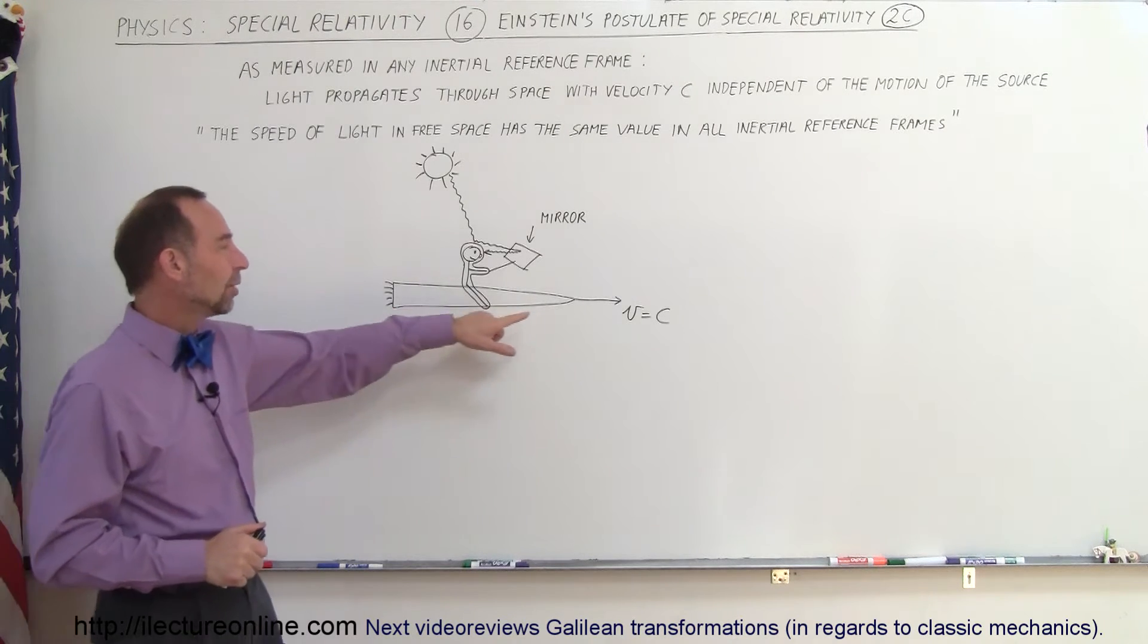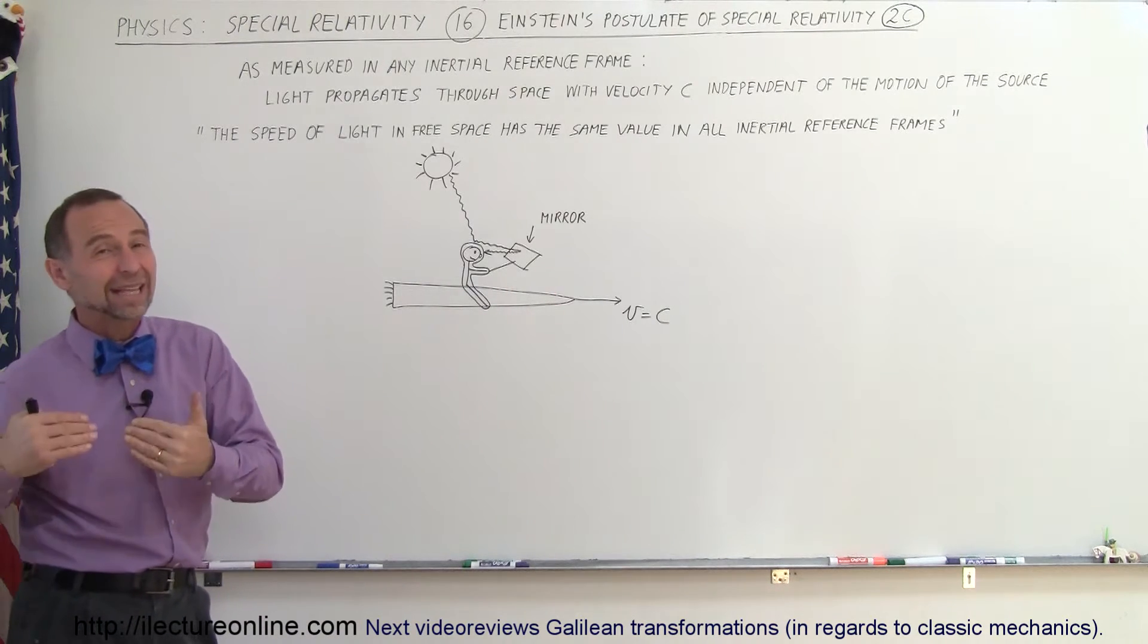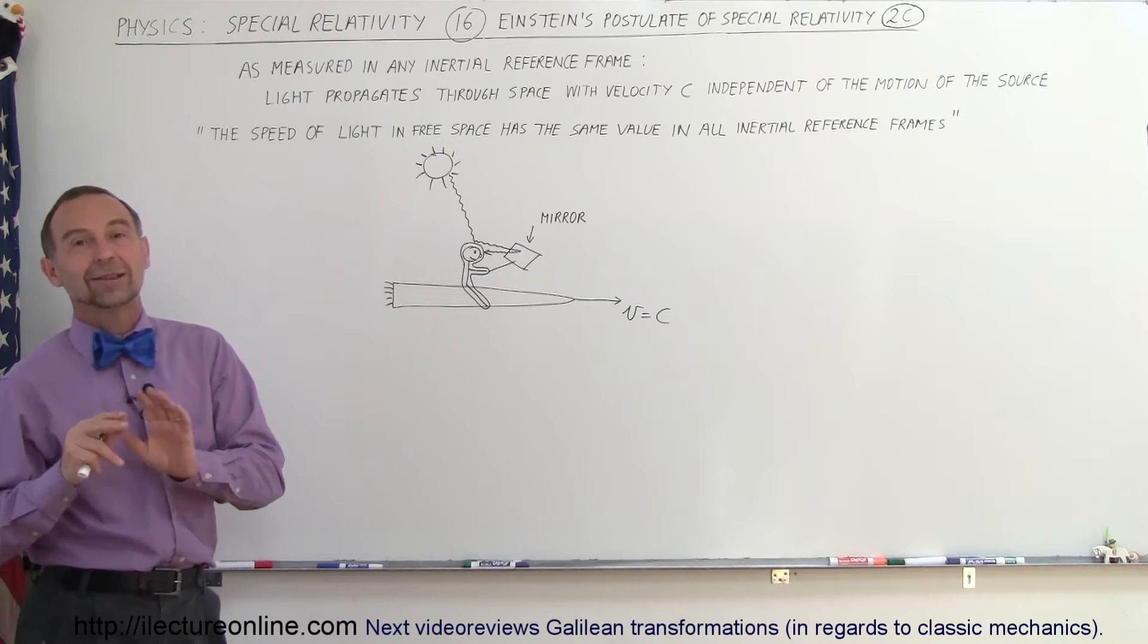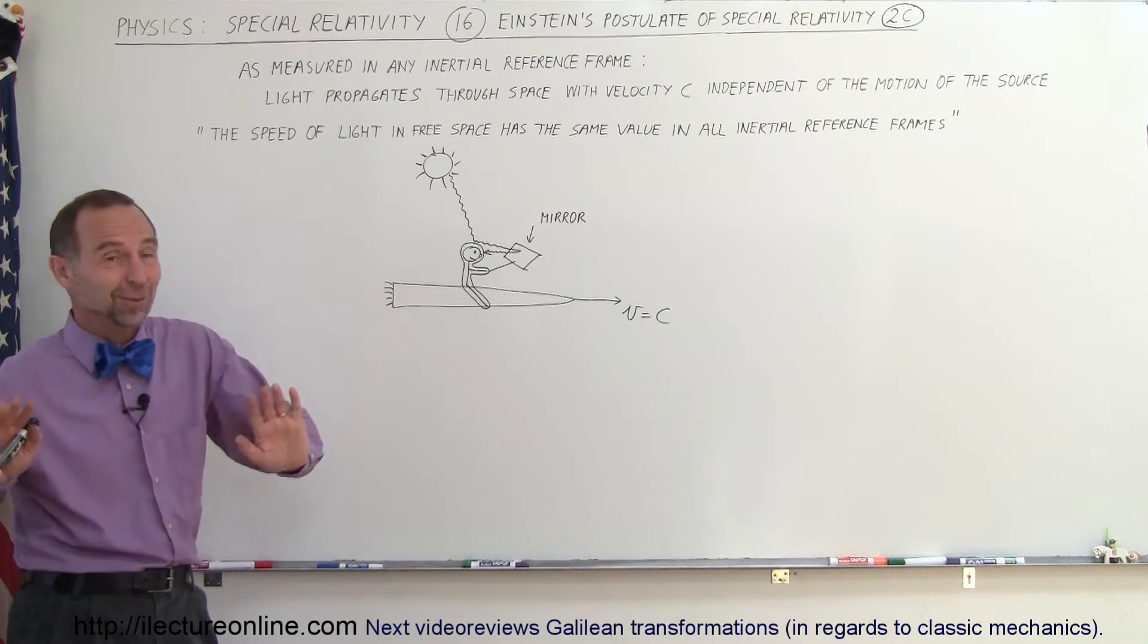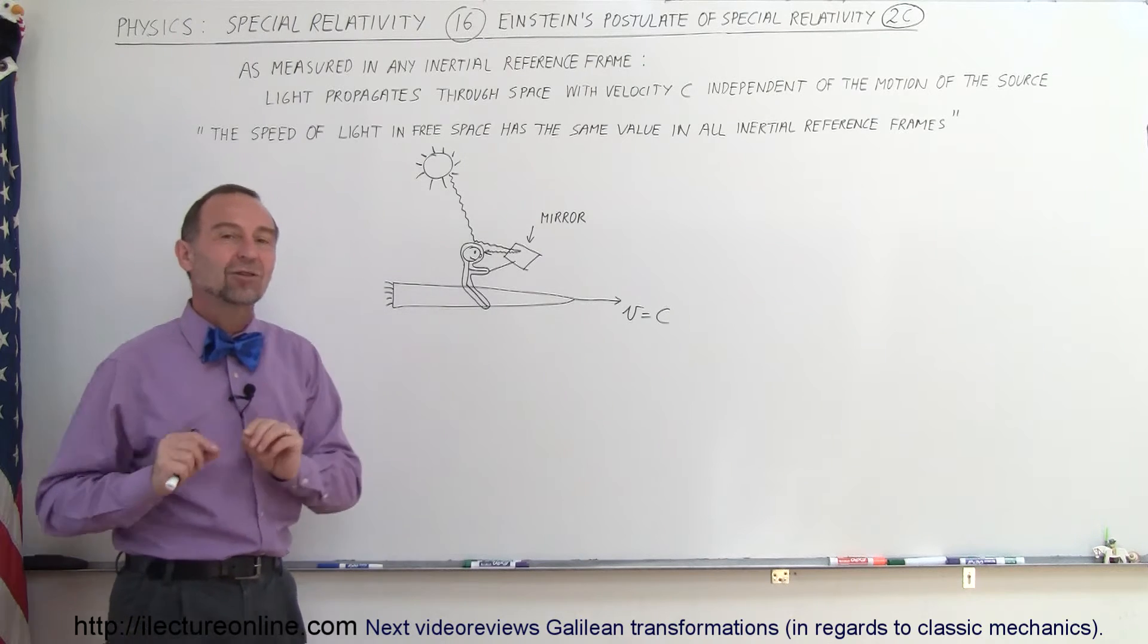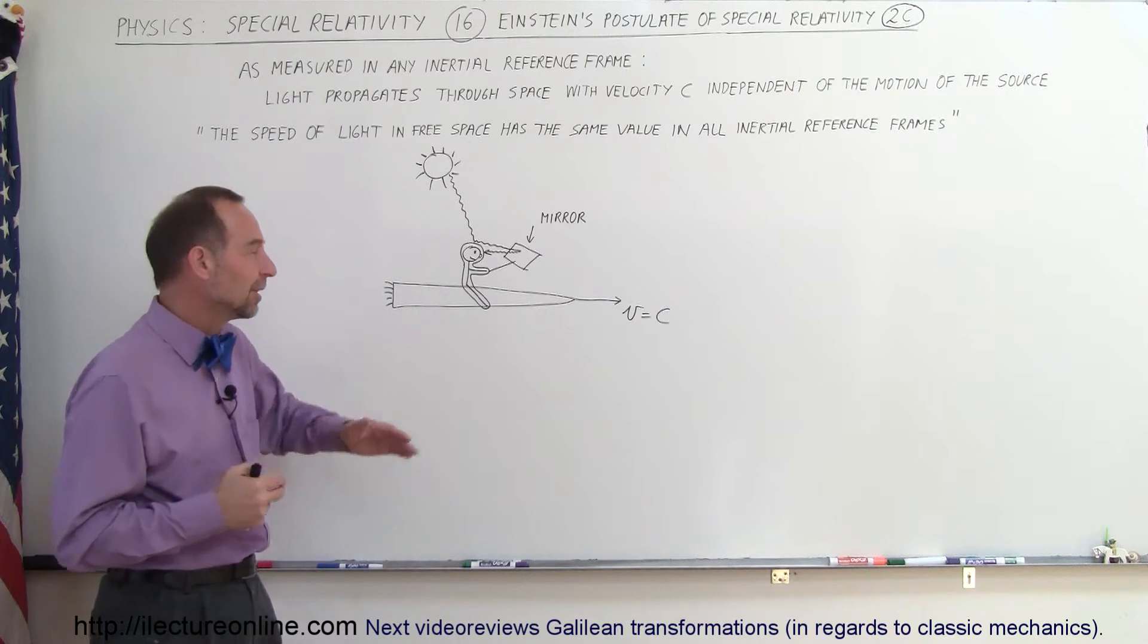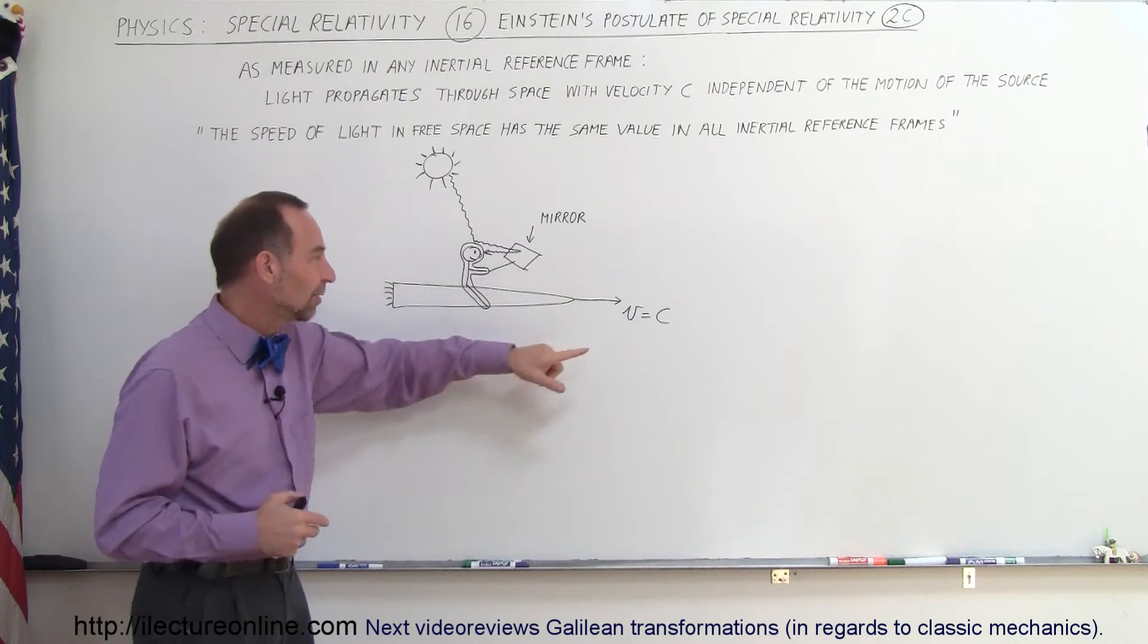He said let's say we're in a rocket moving at the speed of light. Now we understand today that's not possible at all, it has never been possible. Nothing can ever move at the speed of light unless it has no mass, such as light. But let's say we could, just for the sake of argument, have a spaceship that could travel at the speed of light.